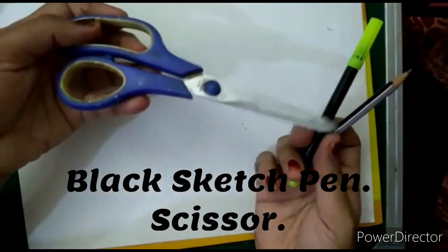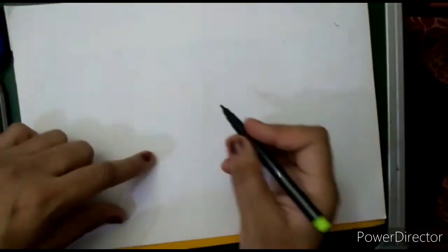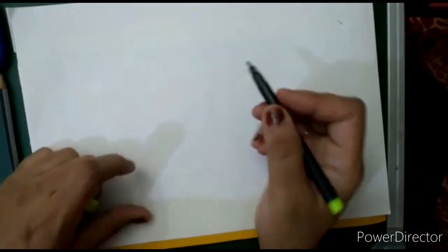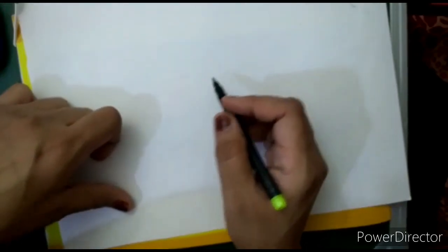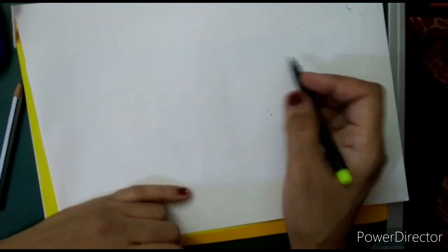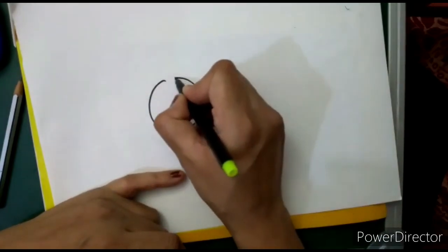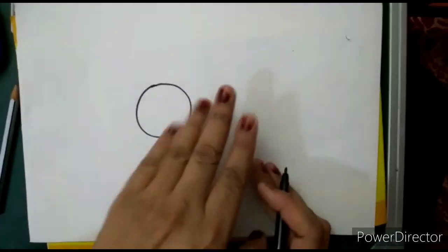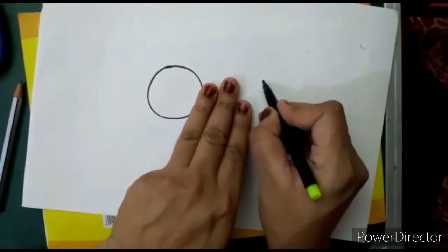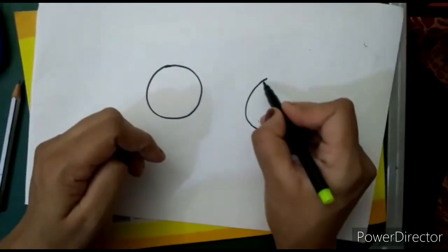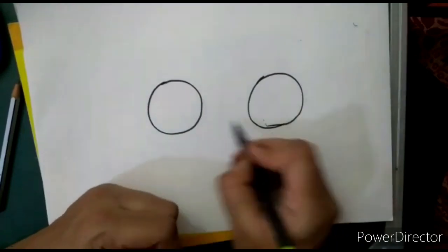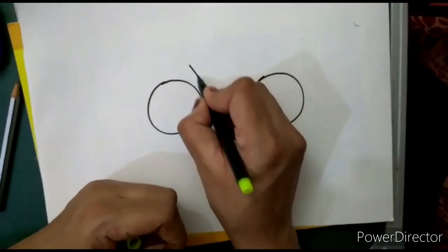Now I am using a sketch pen here to draw a cycle. You can use a pencil and after that use a sketch pen. So let's start. I will draw a circle like this, and I will leave two or three fingers here and draw again a circle like this. Now I will draw a triangle here.